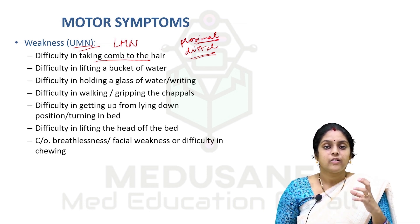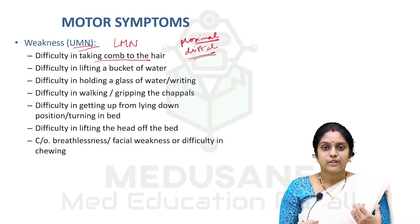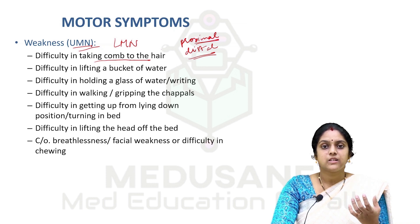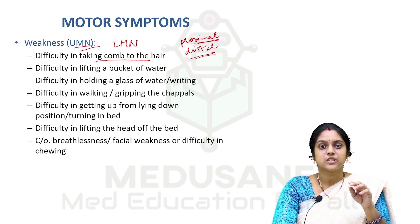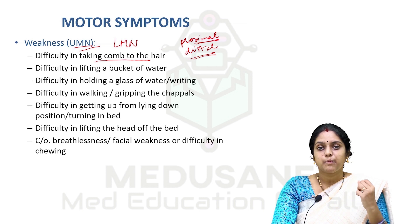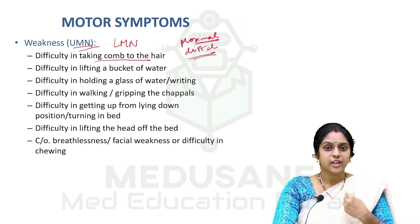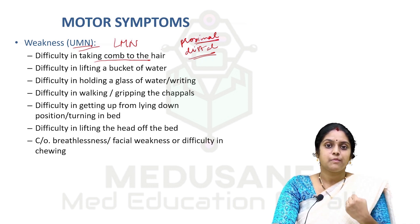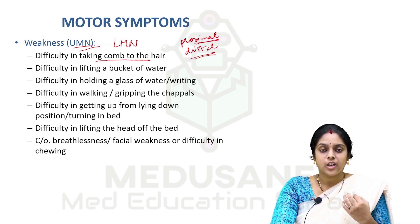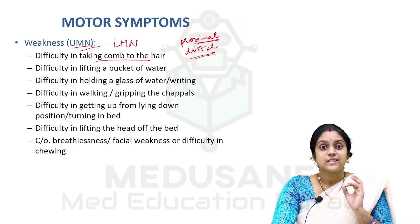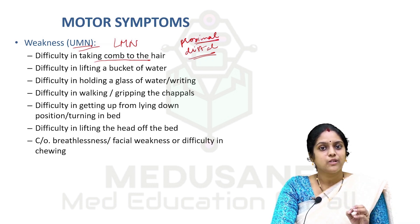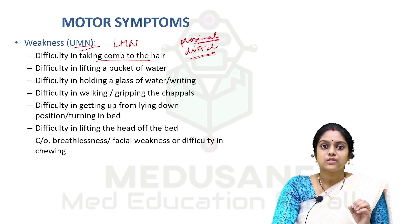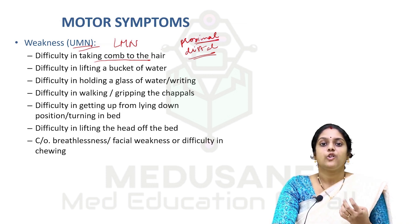When considering the lower limbs, the patient will not be able to grip his chappals in his toes, or he might not be able to lift his leg. He might have difficulty in walking, complain of frequent falls, or say he has to drag his feet to walk. It is our duty to differentiate whether it is an upper motor neuron or lower motor neuron kind of weakness. Some patients can have a mixture of both — upper and lower motor neuron involvement — so we need to keep those conditions in mind when taking the history of a motor symptom.